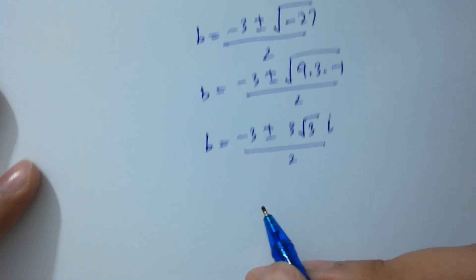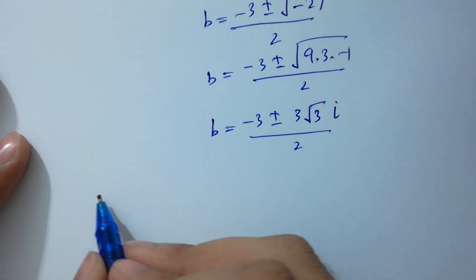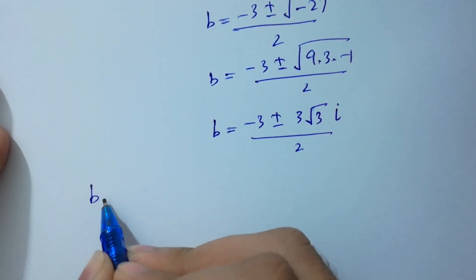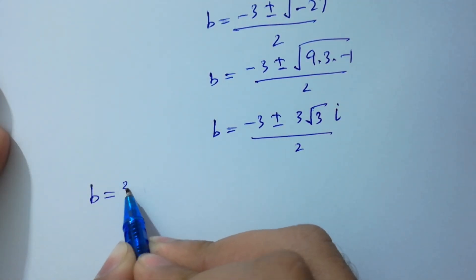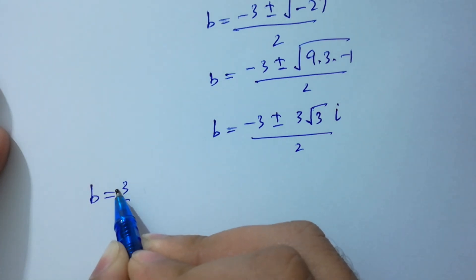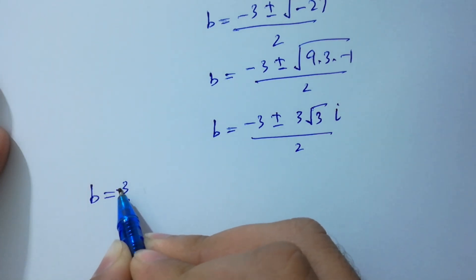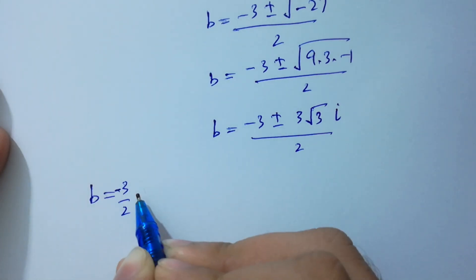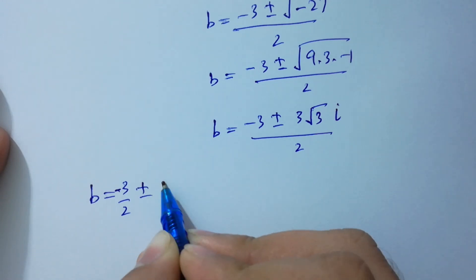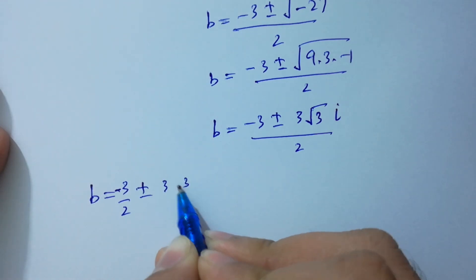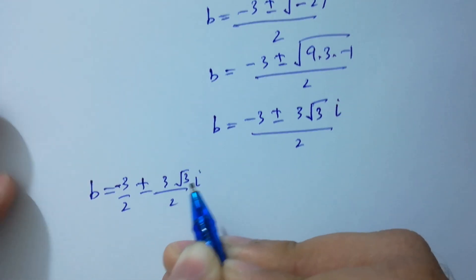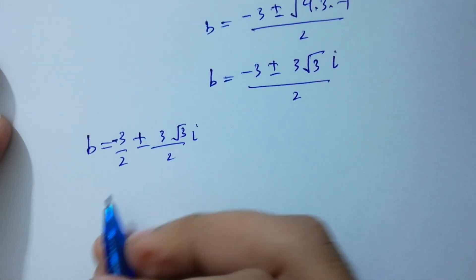Simplifying over 2, B equals minus 3/2 ± 3√3/2 · i, where √(minus 1) equals i from complex numbers.